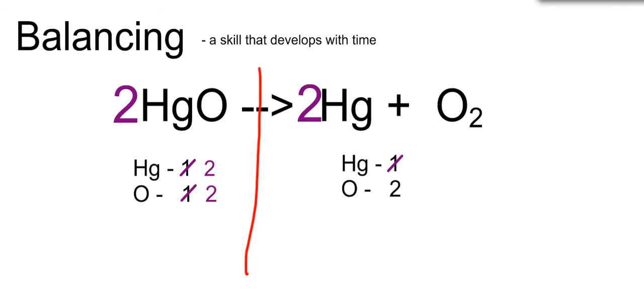When I do that, I go from having 1 mercury to having 2. And my reaction is now balanced.